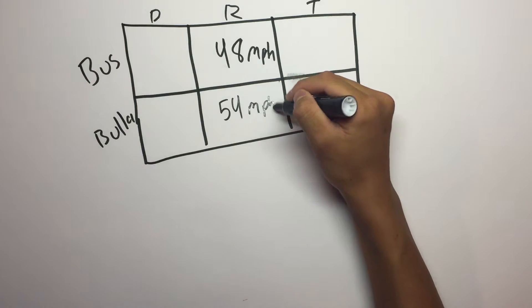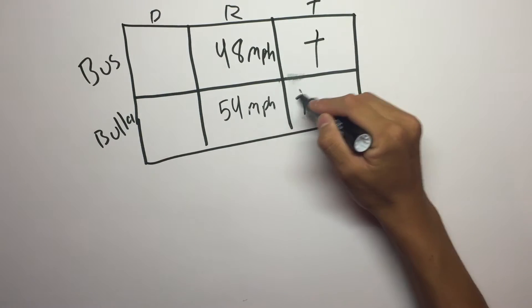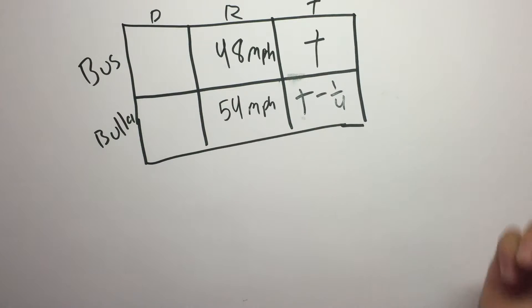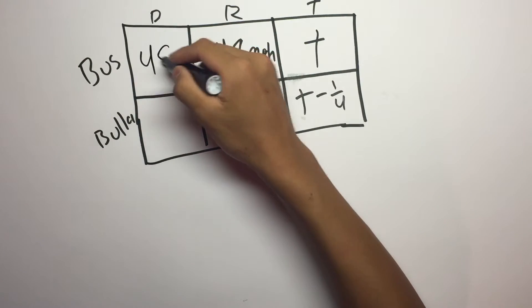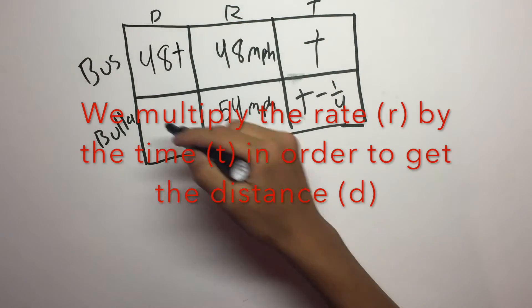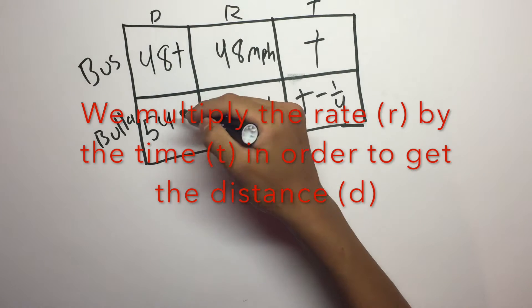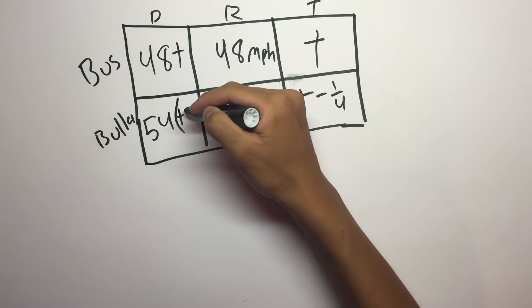Now we're going to put the time as the unknown for T, but it's going to be T minus one fourth for Bula because he left 15 minutes late. So the distance is 48T for the bus and for Bula, it's 54 times T minus one fourth.